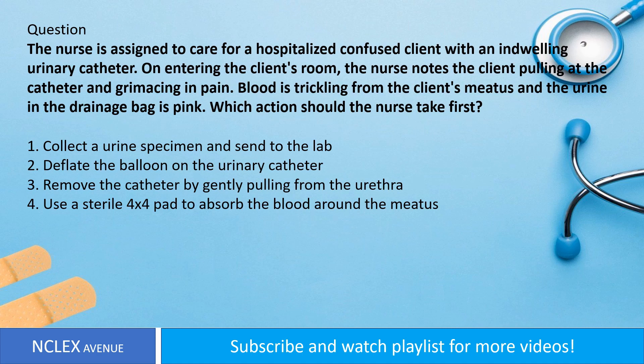Question. The nurse is assigned to care for a hospitalized confused client with an indwelling urinary catheter. On entering the client's room, the nurse notes the client pulling at the catheter and grimacing in pain. Blood is trickling from the client's meatus and the urine in the drainage bag is pink. Which action should the nurse take first? 1. Collect a urine specimen and send to the lab. 2. Deflate the balloon on the urinary catheter. 3. Remove the catheter by gently pulling from the urethra. 4. Use a sterile 4x4 pad to absorb the blood around the meatus.